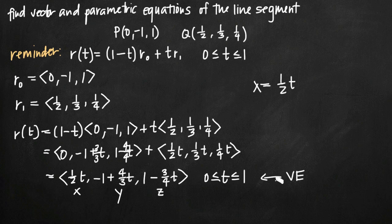The x component of our vector equation that we already found. y = -1 + 4/3·t, and z = 1 - 3/4·t. And these three together are the parametric equations of the line segment joining these two coordinate points. So that's how you find vector and parametric equations of a line segment.